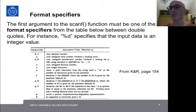The first argument to the scanf function must be one of the format specifiers from the table in these slides, between double quotes. For instance, "%d" specifies that the input data is an integer value. The table in the slides presents the different format specifiers that we can use. Among the most used ones, we have %d for integers, %f for floats, and %c for chars.